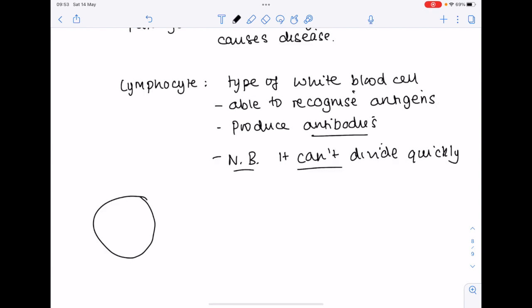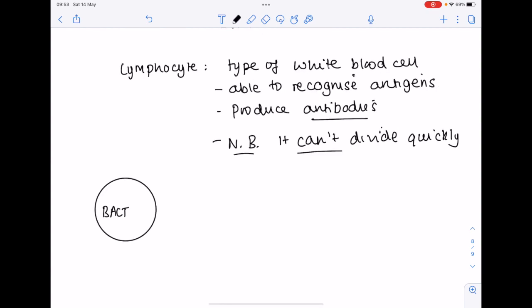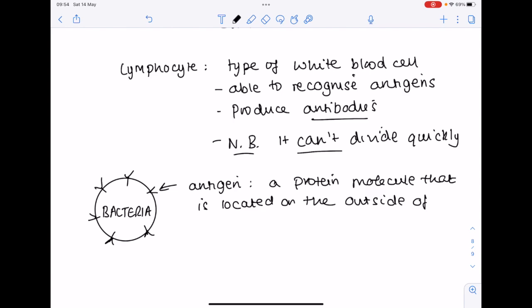Now if we take a pathogen like a bacterial cell, it has molecules on the outside of it. So an antigen is a protein molecule that is located on the outside of a specific molecule. It could be a pathogen, but the crucial thing here is it allows the molecule or pathogen to be identified.